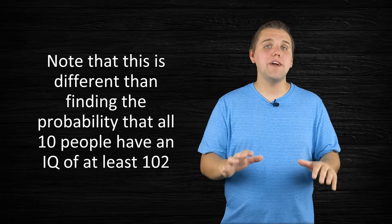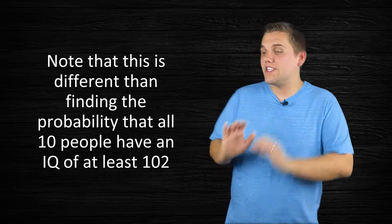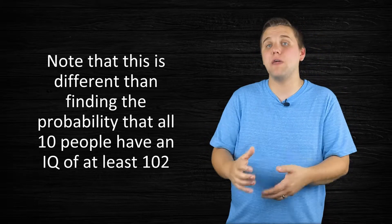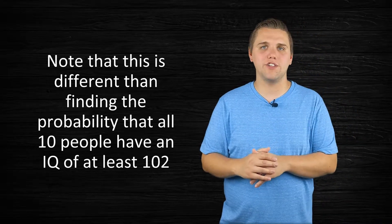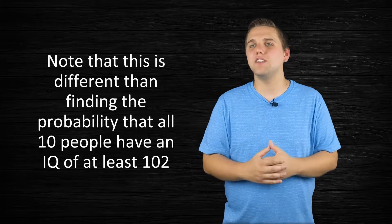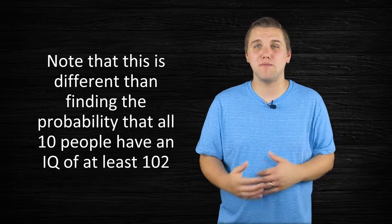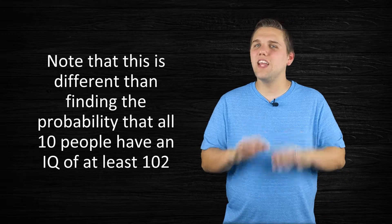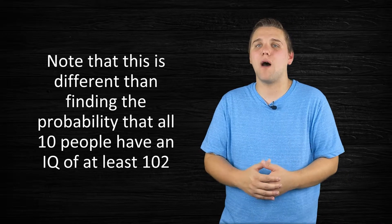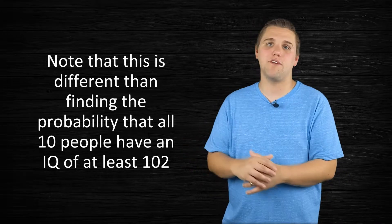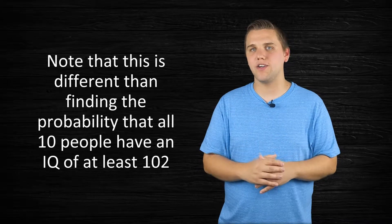Now I want to mention that this hypothetical problem is actually different than finding the probability that all 10 people have an IQ greater than 102. That problem can be done using some basic understanding of probability, but this is a little bit more complex because we're talking about the probability that the average of these 10 people is greater than 102.